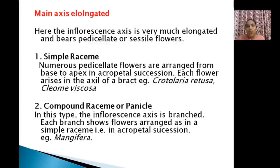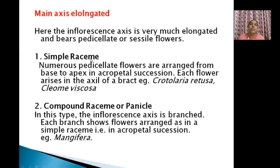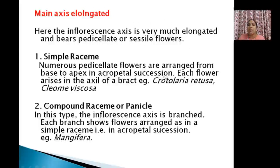There are two types of flowers arranged on the axis. One is pedicelate — flower with a stalk (pedicel). The other is sessile — flower without a stalk. Under main axis elongated with pedicelate flowers, the first type is simple raceme: numerous pedicelate flowers in acropetal succession, each flower arising in the axil of a bract. Example is Crotalaria.